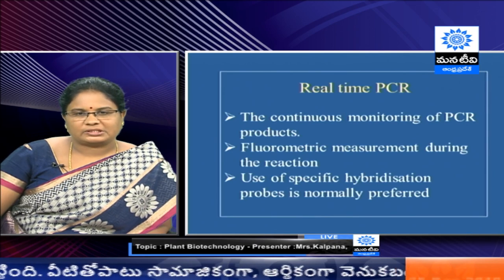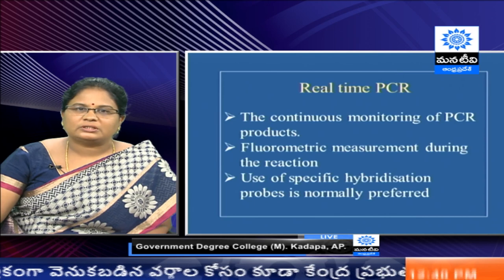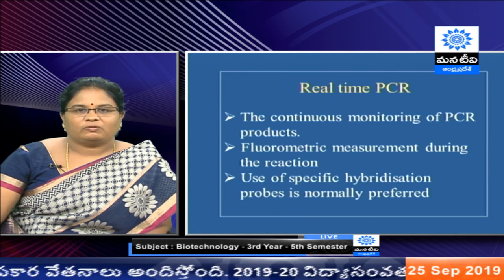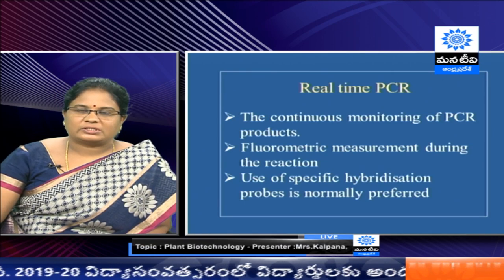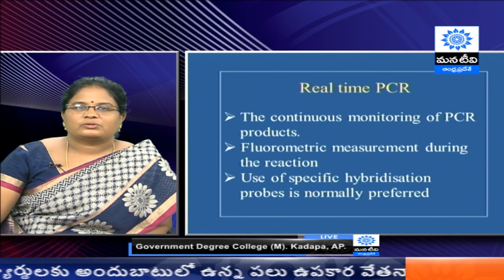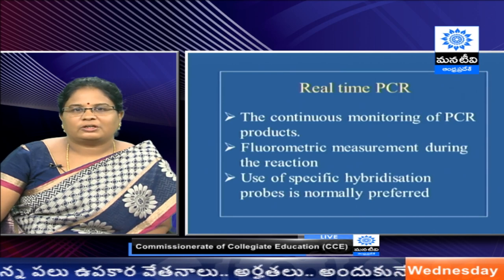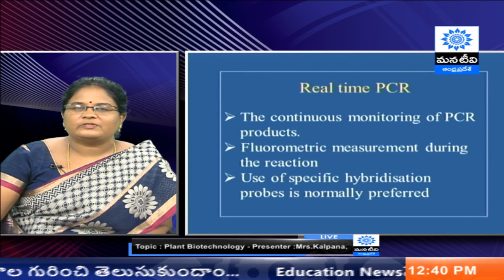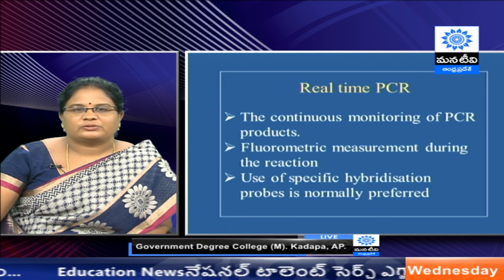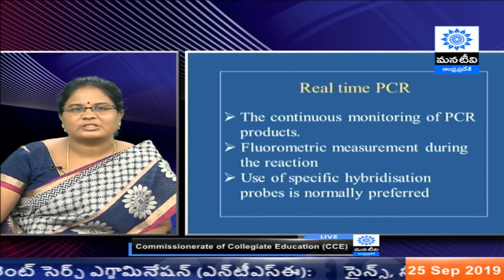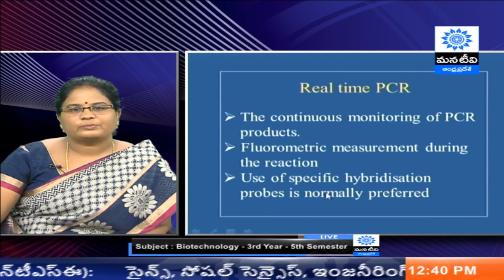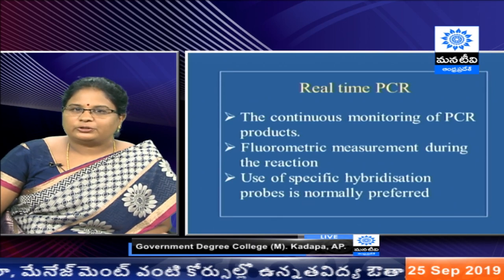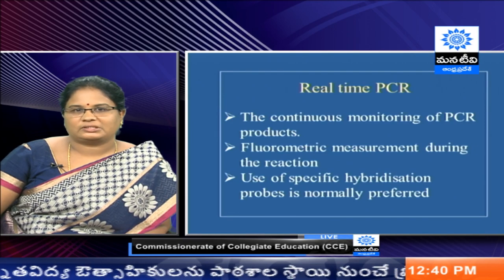For real-time PCR, we can continuously monitor the PCR products using fluorometric measurement. Generally we use SYBR Green I dye, which gives a fluorescent color when there is double-stranded DNA. However, in real-time PCR we cannot distinguish specific from non-specific DNA — any double-stranded DNA gives a signal. If we want only specific DNA quantification, we have to use specific hybridization probes. This allows us to estimate, during each PCR cycle, how many gene copies are present in the plant genome.